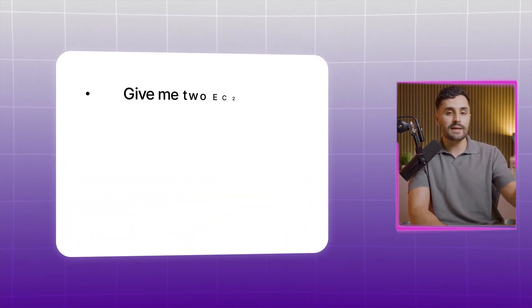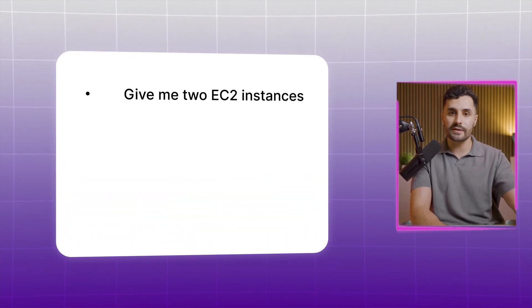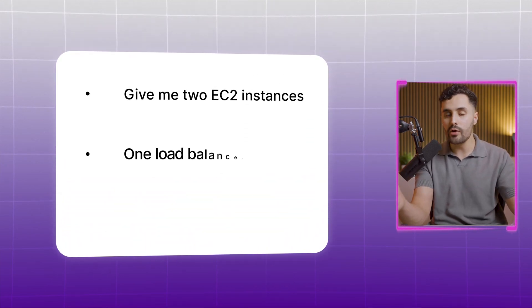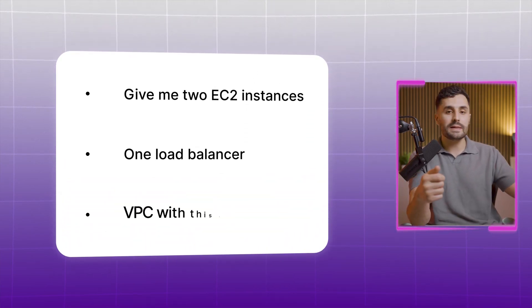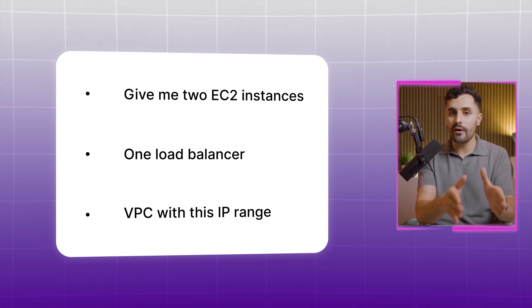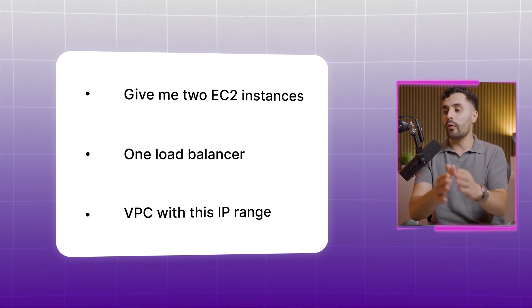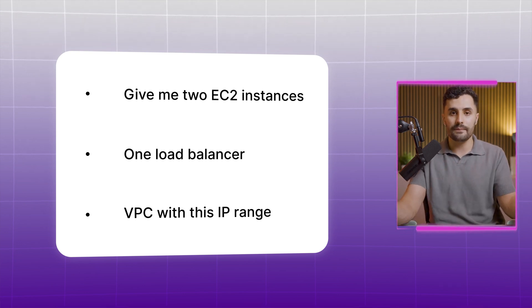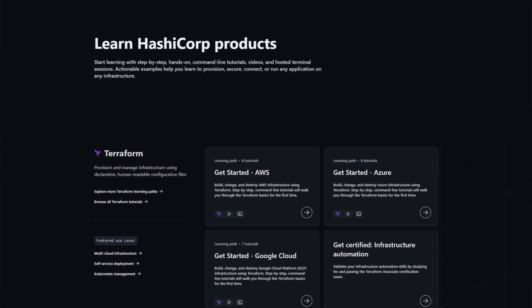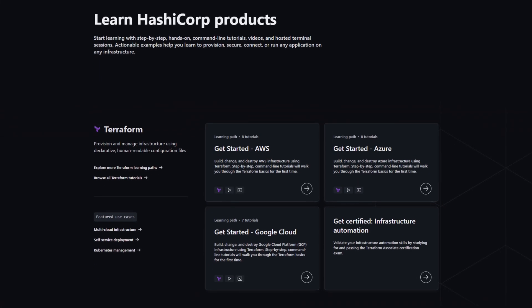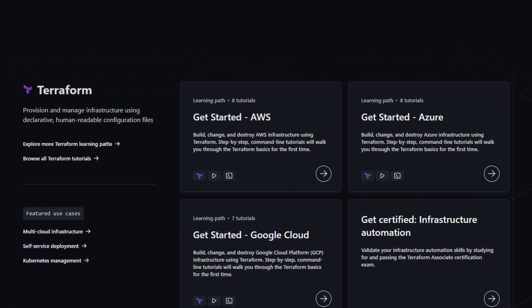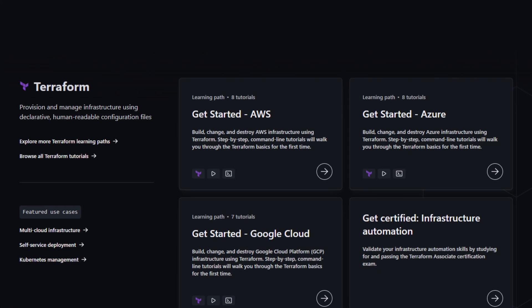Instead of clicking buttons in the console, you write code that says: give me two EC2 instances, one load balancer, a VPC with this IP range — and Terraform builds it all automatically. To get started with Terraform, go to HashiCorp tutorials — there's a dedicated section on Terraform with AWS, and it's completely free.